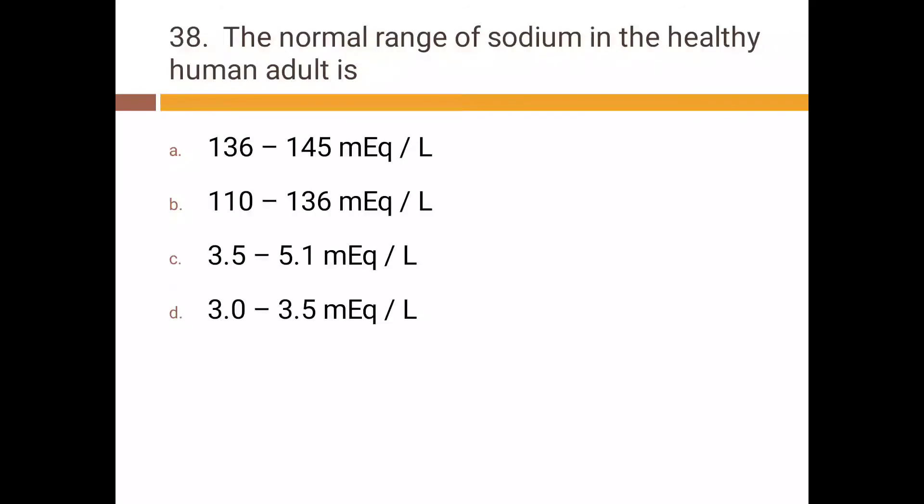The normal range of sodium in the healthy human adult is: a) 136 to 145 mEq per liter, b) 110 to 136 mEq per liter, c) 3.5 to 5.1 mEq per liter, d) 3.0 to 3.5 mEq per liter. Correct answer is 136 to 145 mEq per liter.